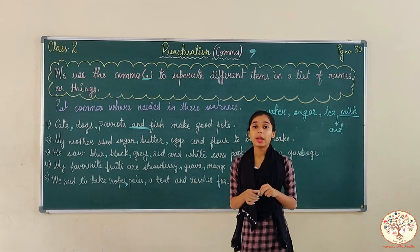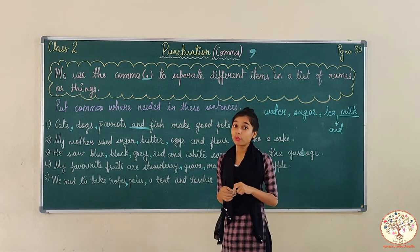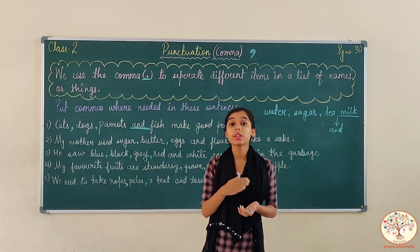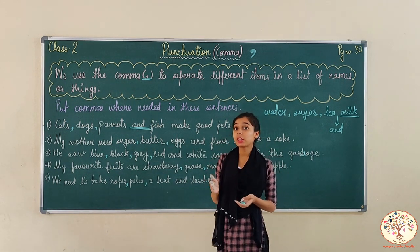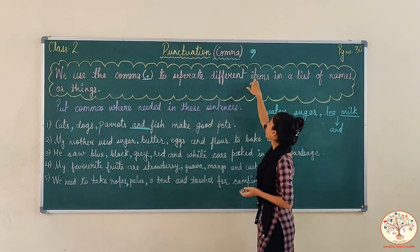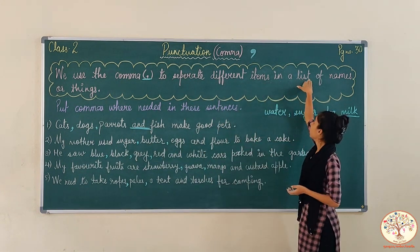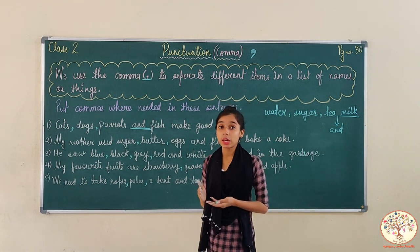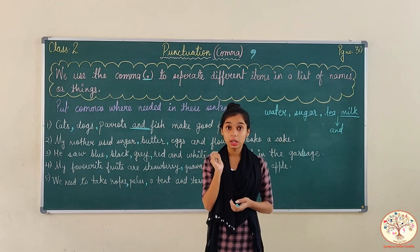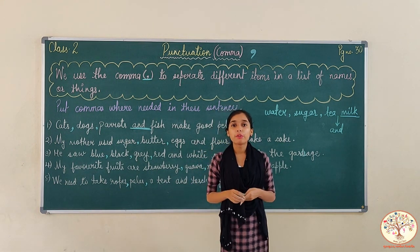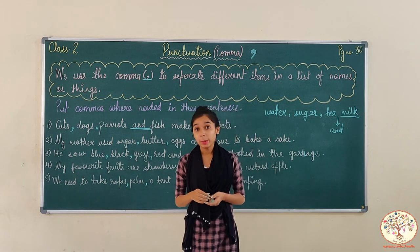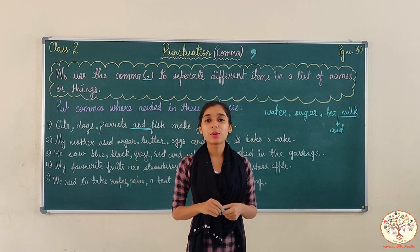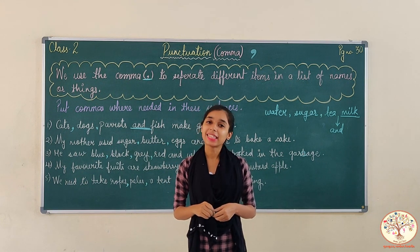This is all for today. We have learnt about the use of commas — where to use commas. Commas are always used to separate different items in the list of names or things. हम चीजों को separate करने के लिए commas यूज करते हैं. We'll be back with more new concepts and new videos. So till then, stay tuned. Please do like, share and subscribe our channel. Thank you.